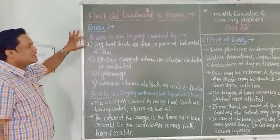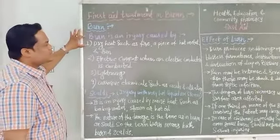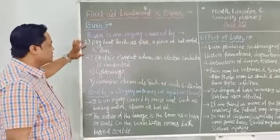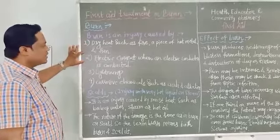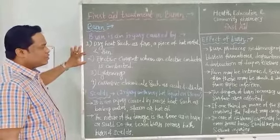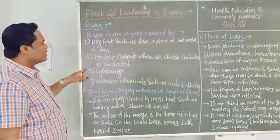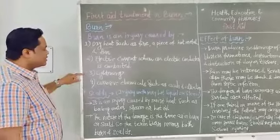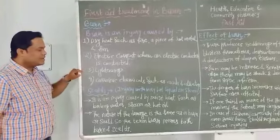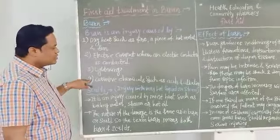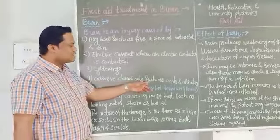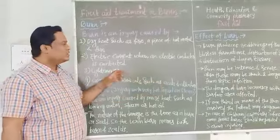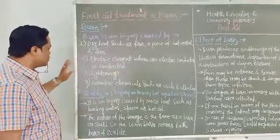To summarize, the causes of burn are: first, dry heat such as fire, a piece of hot metal, and sun; second, electric current when an electric conductor is contacted; third, lightning; and fourth, corrosion chemicals such as acid and mercury.